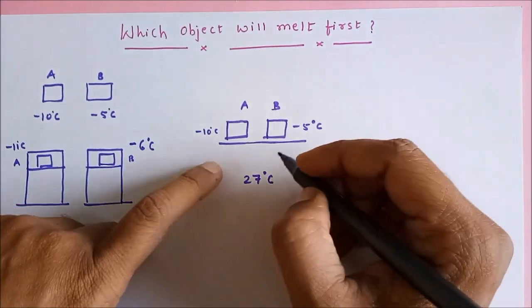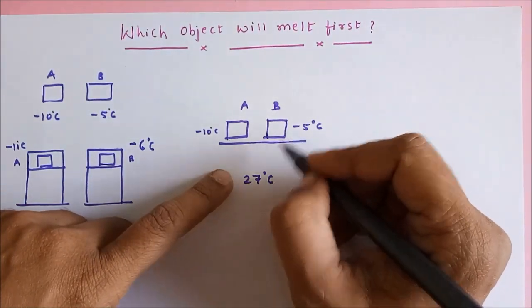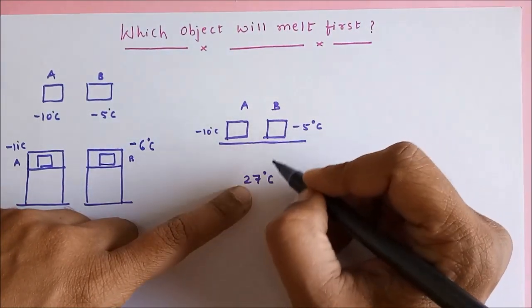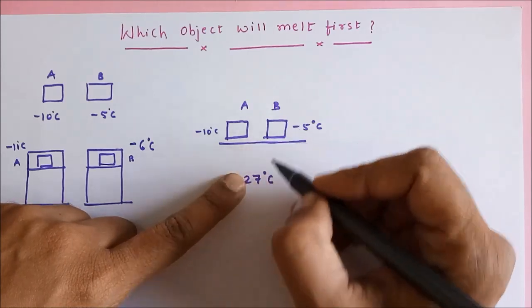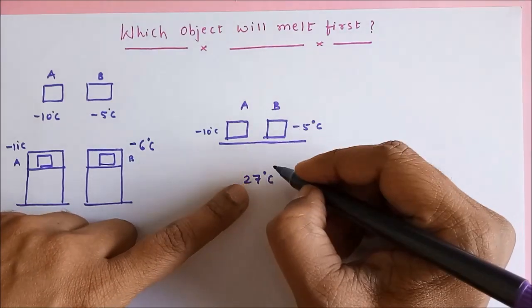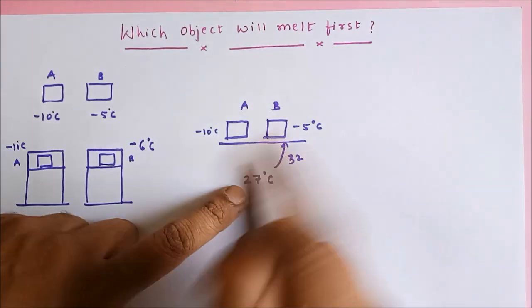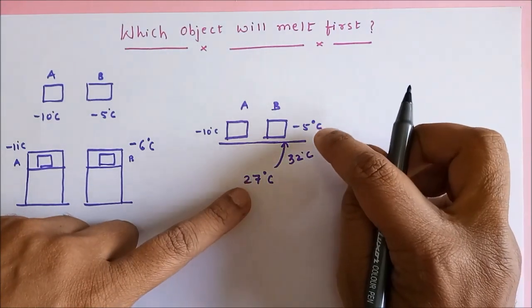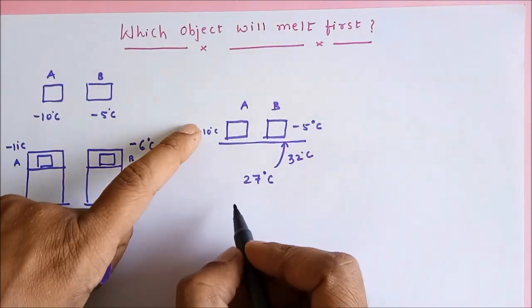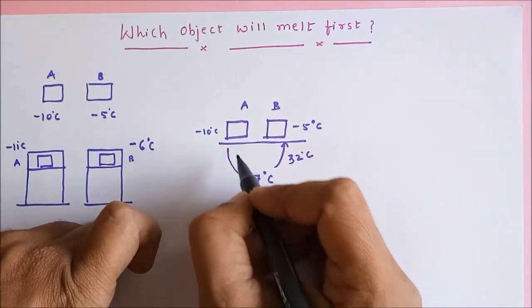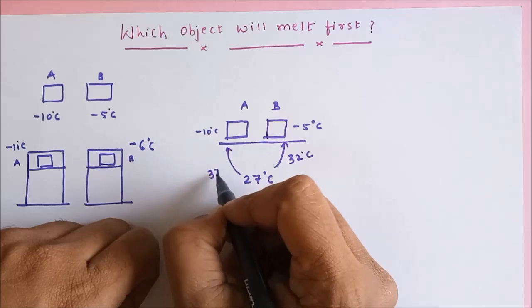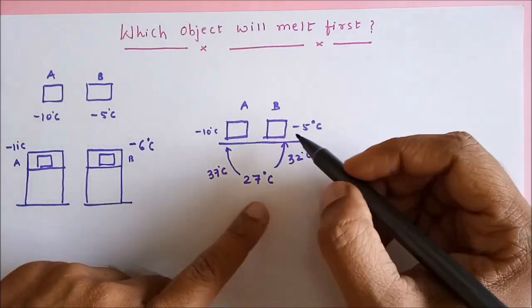I felt that this is the answer to the problem: the difference in temperature is quite less here. 27 to minus 5, so the difference is about 32 degree Celsius. I am taking the difference between these two. And here the difference is 37 degree Celsius.